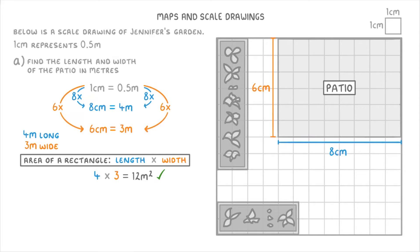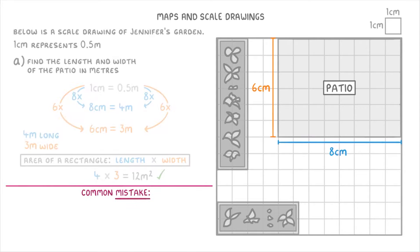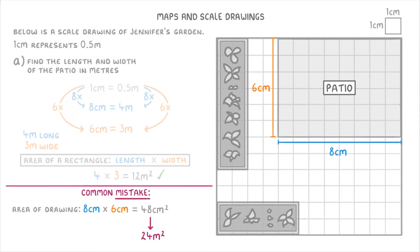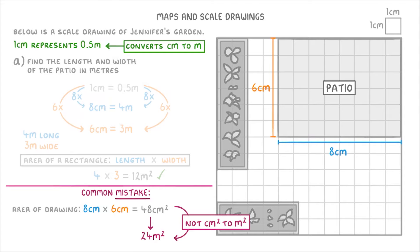One thing I want to point out here is that a common mistake with this type of question in exams is to find the area of the drawing in square centimetres, and then try to convert that value straight to square metres, which unfortunately doesn't work. For example, if we found the area of the drawing by doing 8 centimetres times 6 centimetres to get 48 square centimetres, we couldn't then use our scale to convert that to 24 square metres, because our scale only converts centimetres to metres, not square centimetres to square metres.